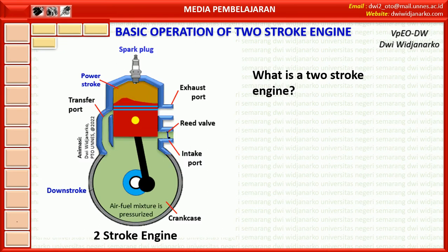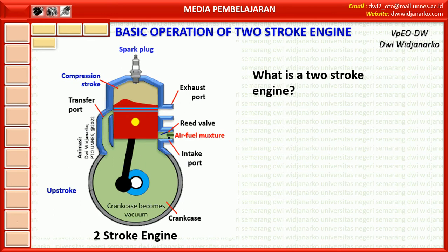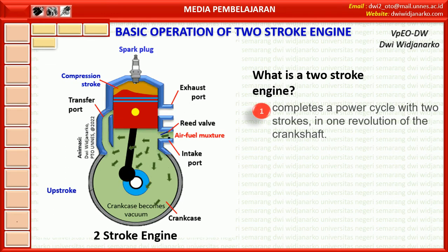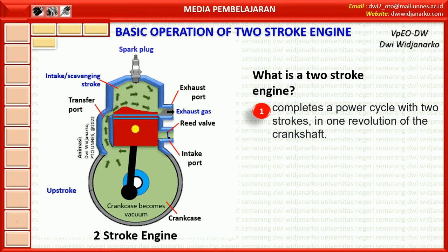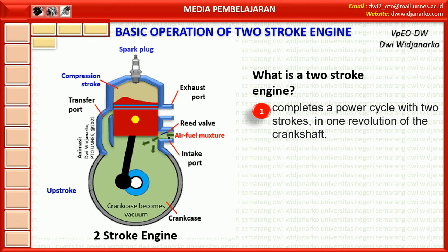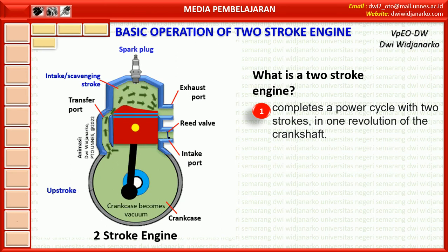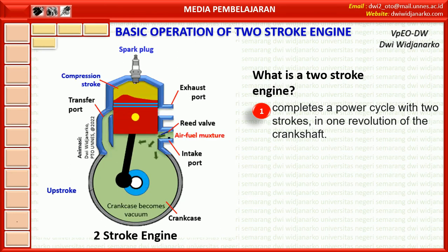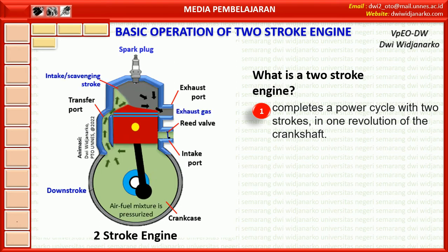What is a two-stroke engine? A two-stroke or two-stroke cycle engine is a type of internal combustion engine that completes a power cycle with two strokes — up and down movements — of the piston during one power cycle, this power cycle being completed in one revolution of the crankshaft. In comparison, a four-stroke engine requires four strokes of the piston to complete a power cycle during two crankshaft revolutions.